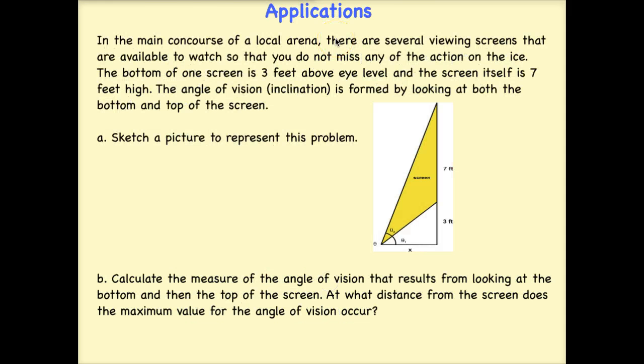Let's try one that will cause us to think a little bit more. In this example, in the main concourse of a local arena, there are several viewing screens that are available to watch so that you do not miss any of the action on the ice. The bottom of one screen is 3 feet above eye level, and the screen itself is 7 feet high. The angle of vision, which we call the inclination, is formed by looking at both the bottom and top of the screen.